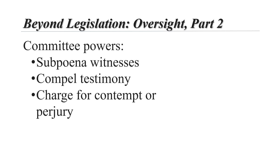Because if they don't, they can find them in contempt of Congress. They can charge them for perjury if they lie during testimony. But the problem with some of these oversight powers is it depends essentially on cooperation from the executive branch to prosecute anybody that's been found in contempt or perjury. And that is a problem because essentially you're asking the executive branch to prosecute itself.